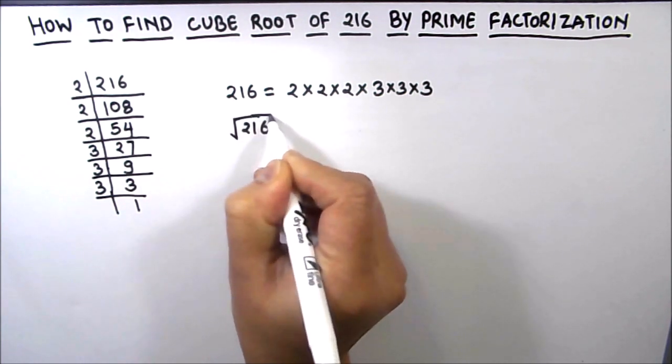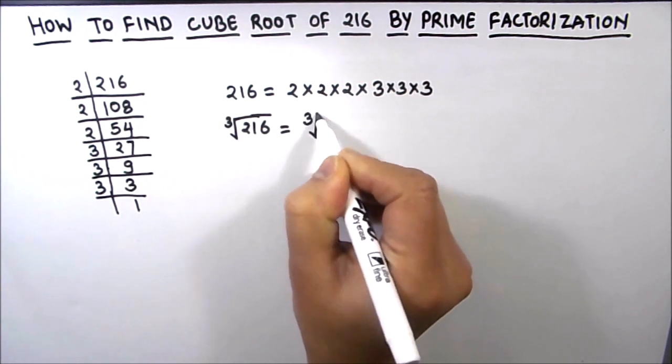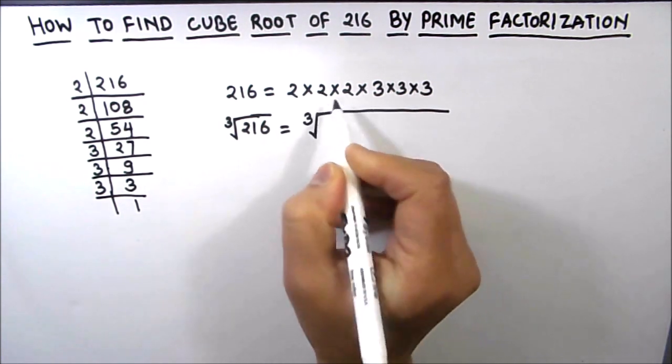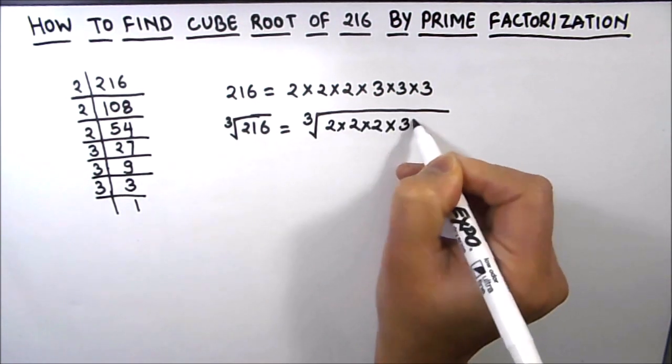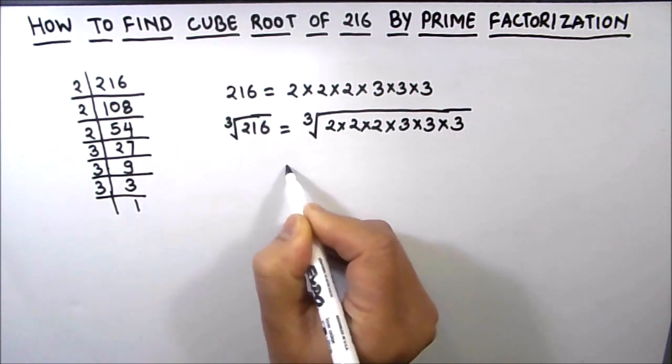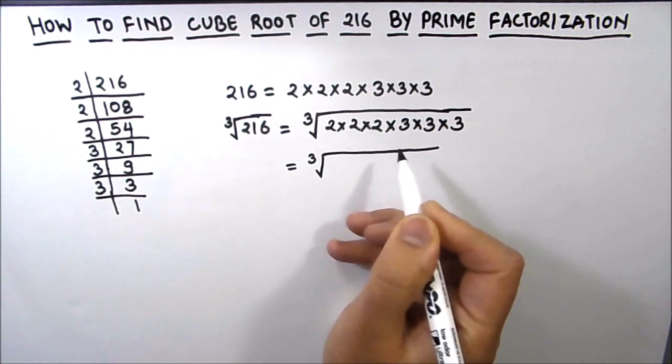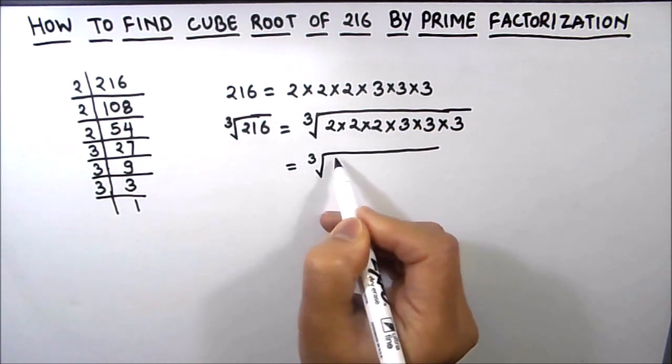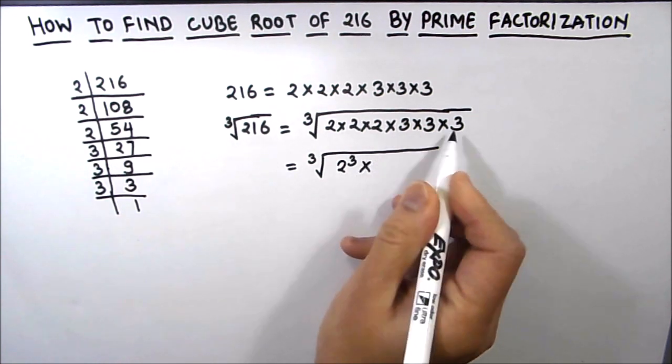So cube root of 216 is equal to cube root of 2 times 2 times 2 times 3 times 3 times 3. Now 2 times 2 times 2 can be written as 2 cubed, and this can be written as 3 cubed.